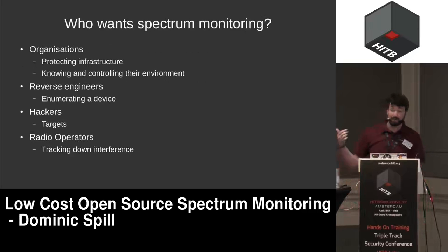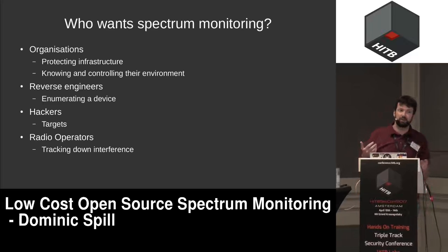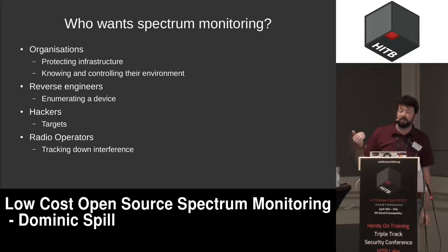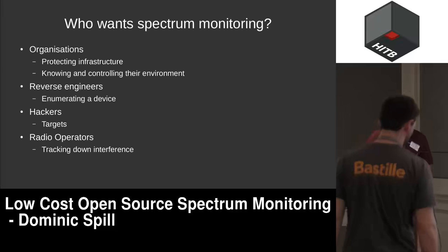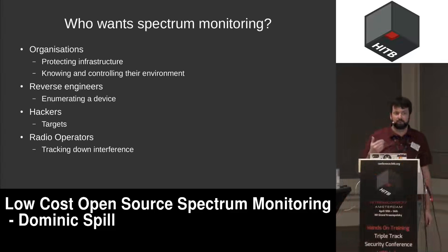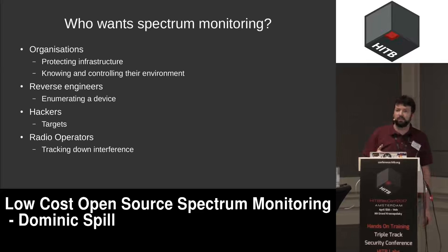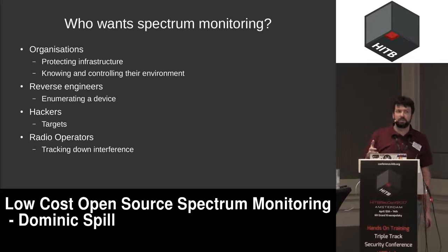If you work in an environment with a network, you hopefully monitor your network for people adding devices and monitor your Wi-Fi for people connecting. But are you doing anything to monitor whether someone might bring in a transmitter that exfiltrates data over unlicensed 900 megahertz or 433 bands? Do you know if people are doing that? The people who should care are large organizations — it's just part of monitoring your perimeter and your security. There are companies that will sell you solutions to do this.